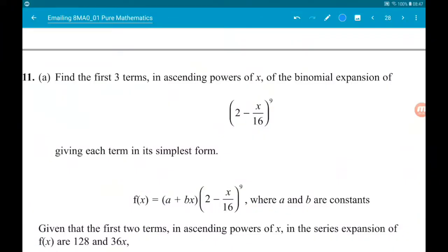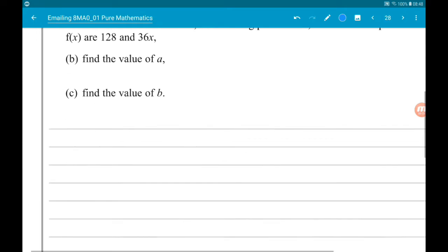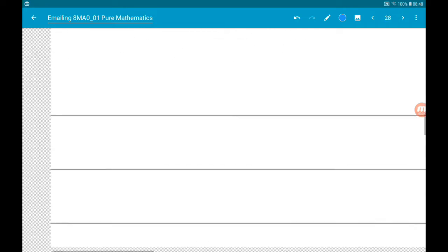Okay, 11a wants us to find the first three terms in ascending powers of x of the binomial expansion of 2 minus x over 16 to the power of 9, giving our answer in its simplest form. So we are given the formula for this, which we'll have a look at in a sec.